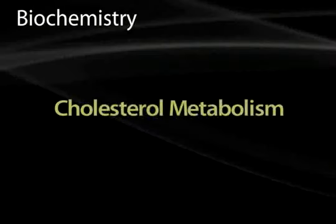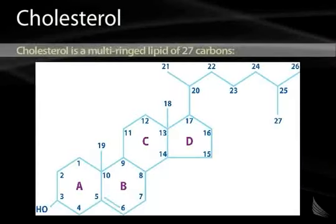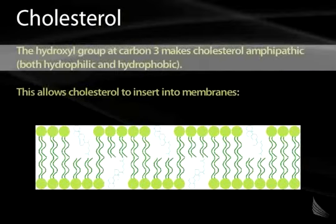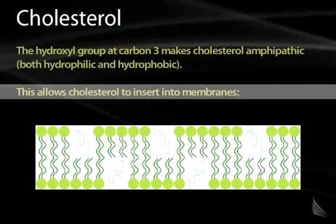In this section we'll be discussing cholesterol metabolism. Cholesterol is a complex lipid formed of multiple rings, with a total of 27 carbons. The hydroxyl group at carbon 3 makes cholesterol amphipathic, similar to phospholipids in that it has both hydrophilic and hydrophobic character. This allows cholesterol to insert itself into membranes where it has important properties.